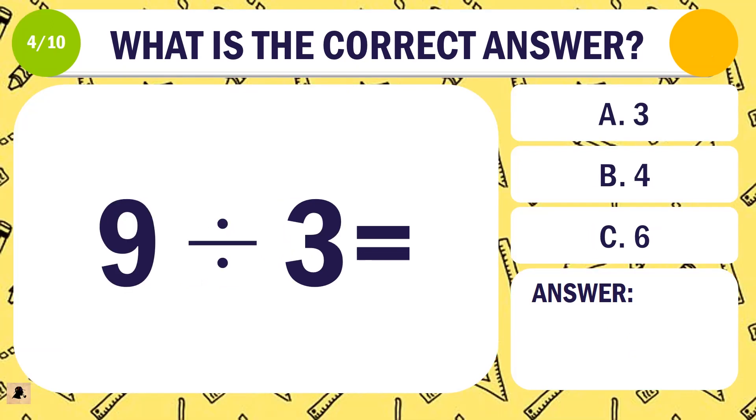Question 4. What is the correct answer for 9 divided by 3? A. 3. B. 4. Or C. 6.